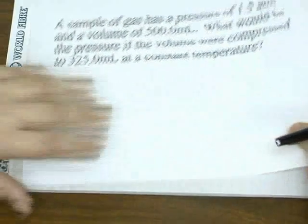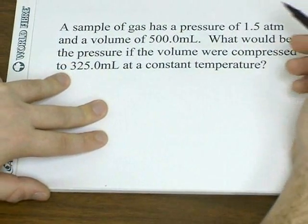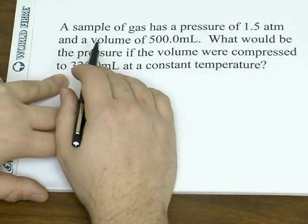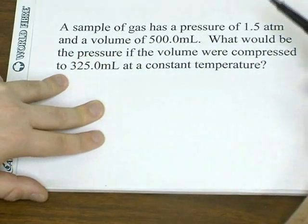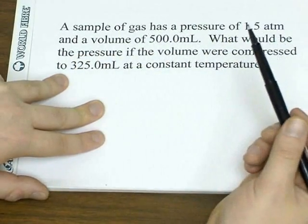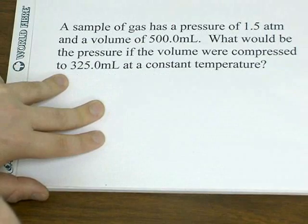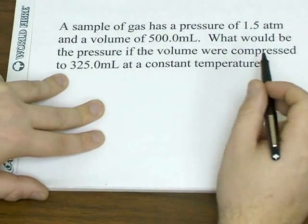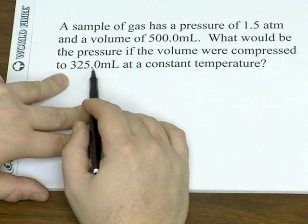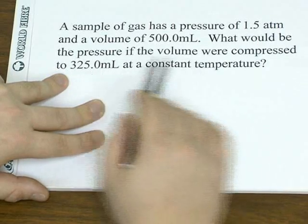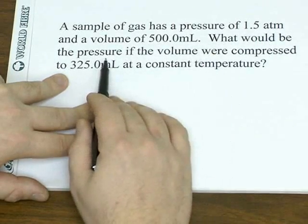For example, let's say you have a sample of gas with a pressure of one atmosphere and a volume of 500 milliliters. You compress the volume to 325 milliliters at a constant temperature. What would be the pressure?